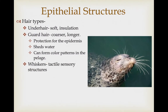There are different hair types just like there are different feather types. Underhair is soft, insulating hair, similar to down feathers. Guard hairs are coarser and longer, providing protection for the animal and the epidermis. They also help shed water and keep the underhair from getting wet. This is what you generally see on the outside, forming color patterns in the pelage used for communication or crypsis. Mammals also have whiskers concentrated around the head, which are tactile sensory structures.